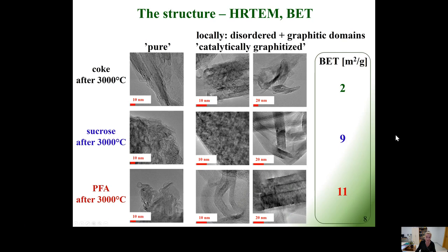High resolution transmission electron microscopy shows that locally the structure of catalytically graphitized hard carbons differs from the structure of these carbons graphitized in pure form at the same conditions, as well as from the structure of soft carbons. You can see fragments with well-graphitized domains. However, the nanoporosity is partially preserved in the catalytically graphitized hard carbons.